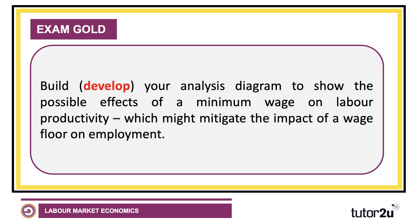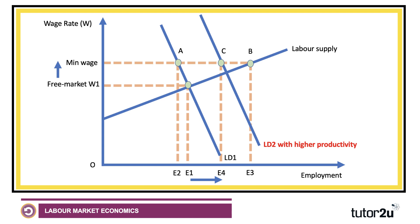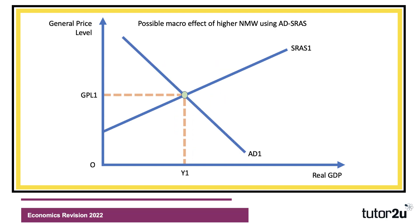The other option is to talk about the impact on productivity. Some economists believe that paying people more increases their productivity — the marginal revenue product of labor — in which case employers might be more likely to employ people. So the labor demand curve shifts with higher productivity, and instead of employment falling from E1 to E2, employment might actually rise from A to C, going up to E4. This challenges the assumption that the minimum wage automatically reduces the number of people in work.